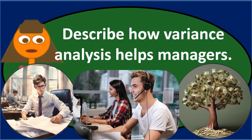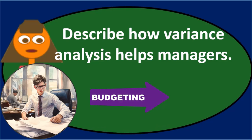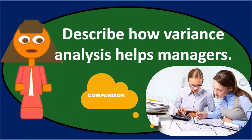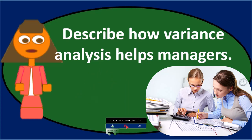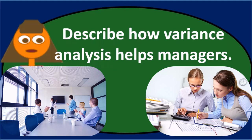The variance analysis process, stepping back further, is similar to a budgeting process: first we set the standards and budgeted numbers, then the actual period goes by, and at the end of the period we know the actual numbers. We then compare the standard numbers to the actual numbers — that difference is the variance. We look at which differences are relevant and material, analyze why they occurred, and then set new standards to begin the process again.